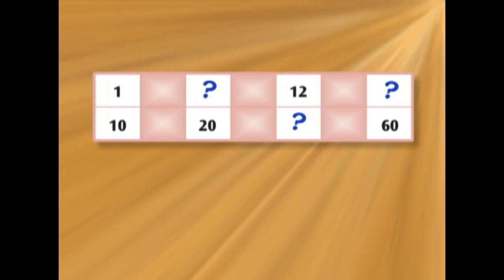1 over 10 equals A over 20 equals 12 over B equals C over 60. So now we're going to find out what A, B and C are worth.